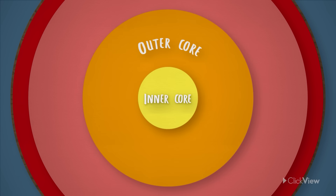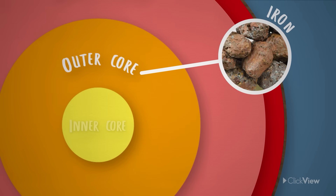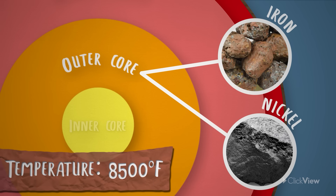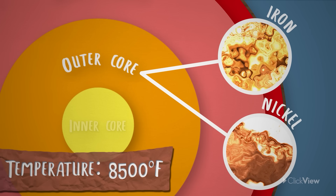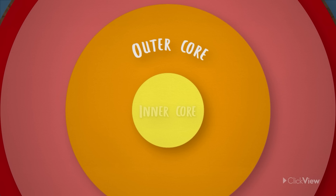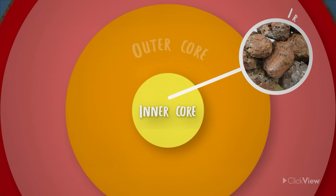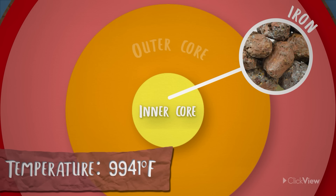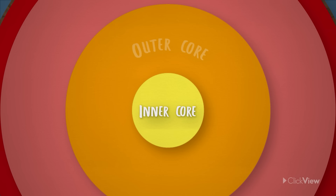The outer core is made of iron and nickel, but because temperatures are so high here, you find these metals in their molten liquid form. At the center of the earth, beneath the outer core, lies the inner core. This layer is a solid ball made of iron. This is the hottest part of the earth, with temperatures as high as the surface of the sun. The inner core stays solid because earth's gravity is so strong the metals cannot melt, despite how hot it is.